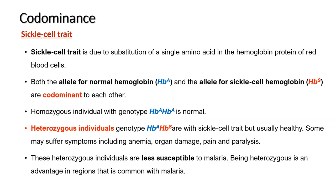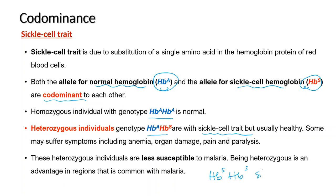Sickle cell trait is another example of co-dominance. Sickle cell is due to substitution of a single amino acid in the hemoglobin protein of red blood cells. The gene for hemoglobin is represented by two alleles: HBA for normal hemoglobin and HBS for sickle cell hemoglobin, and these two are co-dominant to each other. Homozygous individuals with genotype HBA-HBA are normal, heterozygous individuals with genotype HBA-HBS have sickle cell trait, and individuals with HBS-HBS have sickle cell disease.